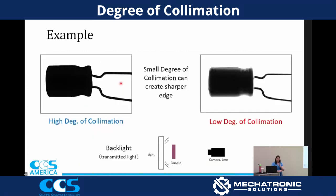Here are examples of high degree of collimation versus low. This image was taken with the MFU backlight — a really highly collimated one — and this image was taken with just a normal backlight, nothing special, positioned pretty close to the sample.